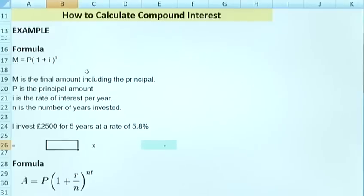So if we take the formula M equals P multiplied by 1 plus R to the power of T where M is your final amount including principal, P is your principal amount, R is the interest rate per year and T is the number of years invested.